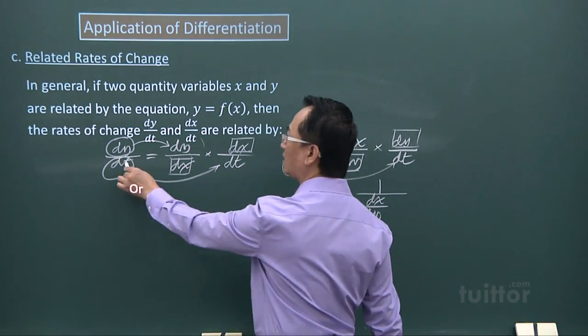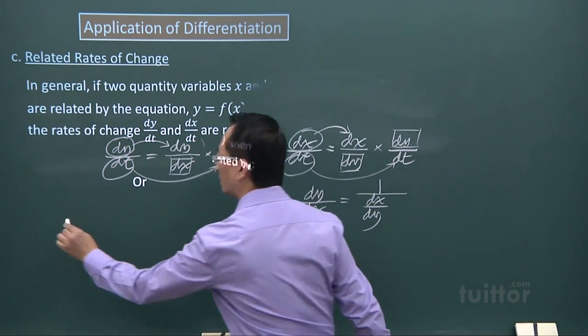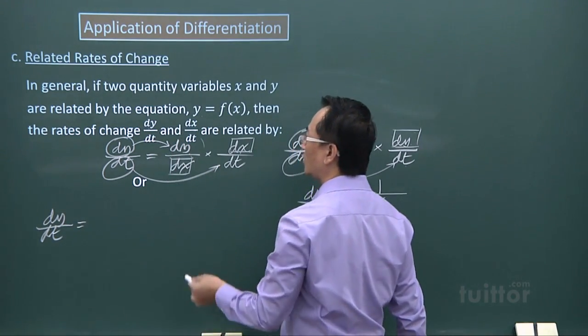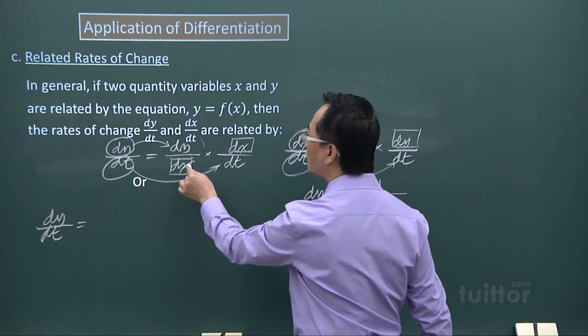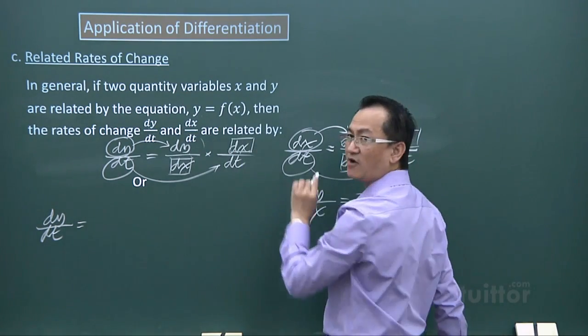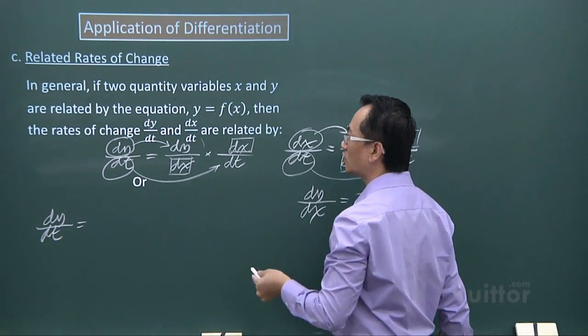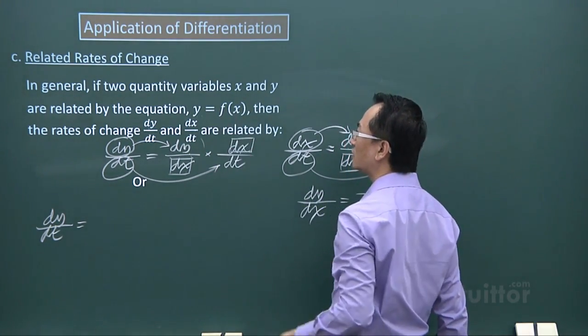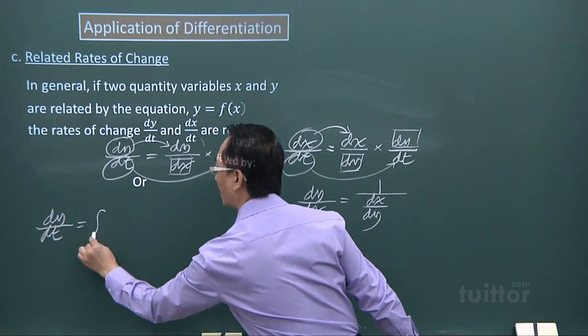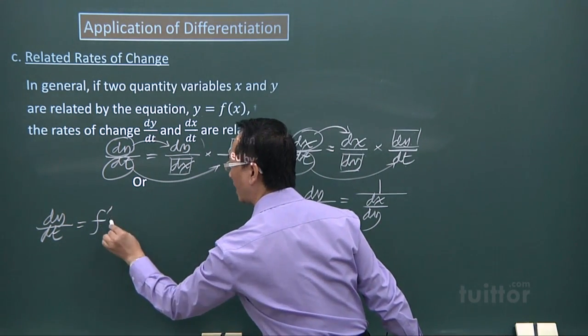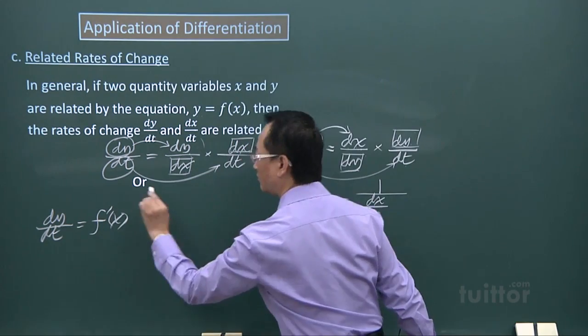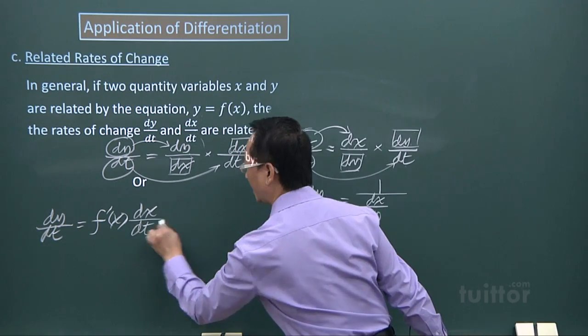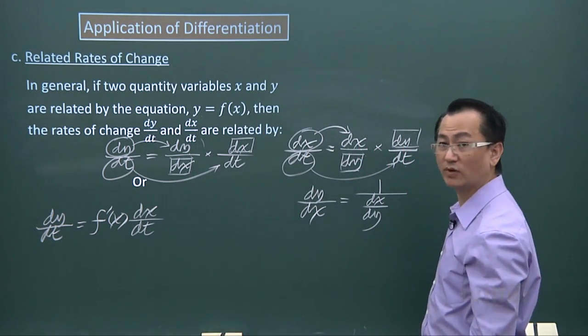Still we have another form of writing it. If I'm looking at dy/dt, this is dy/dx. Remember y refers to f(x), so this is the first derivative of the function. So I can write this as f'(x) times dx/dt. This is one way to do it.